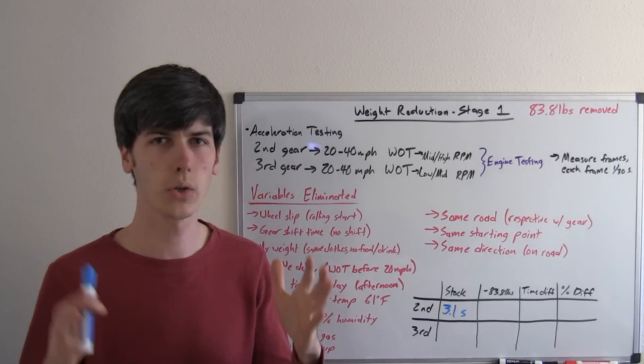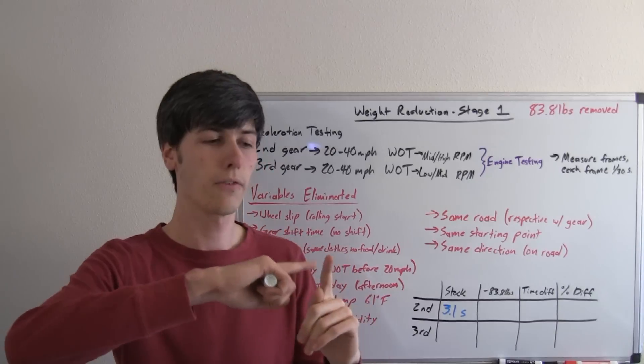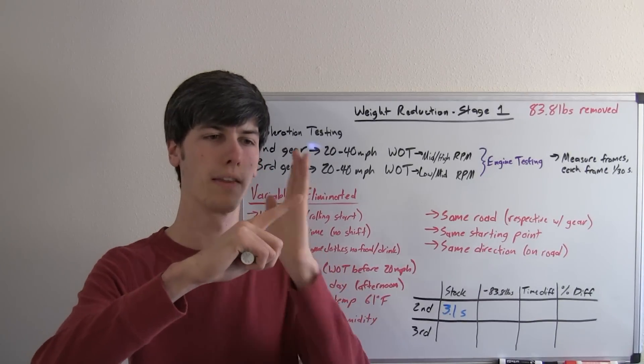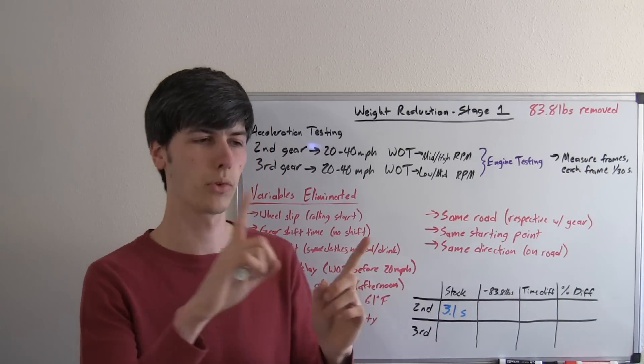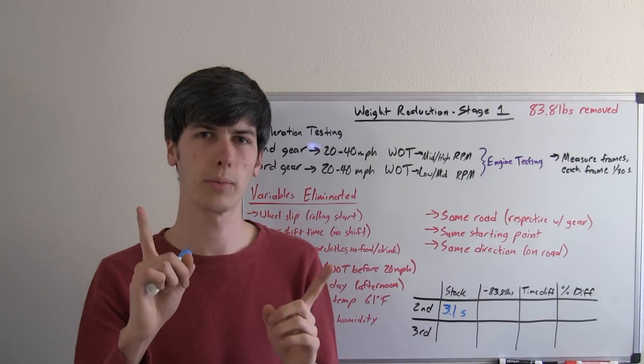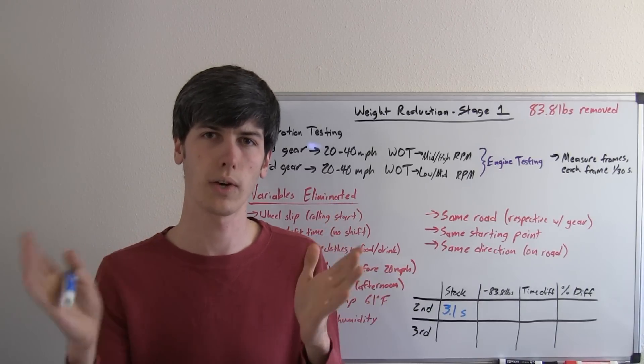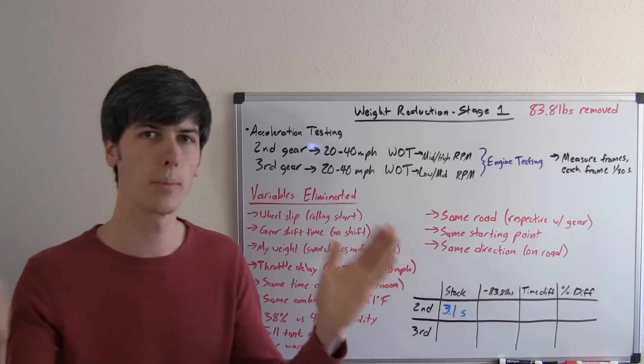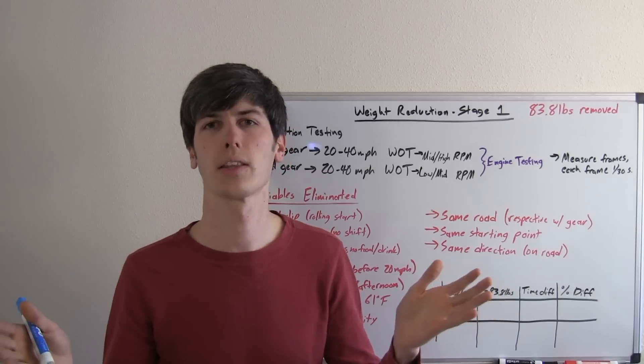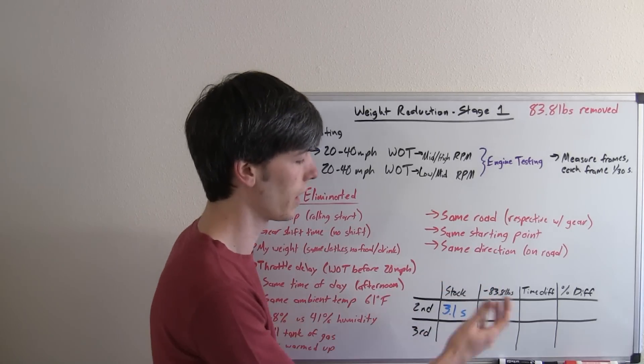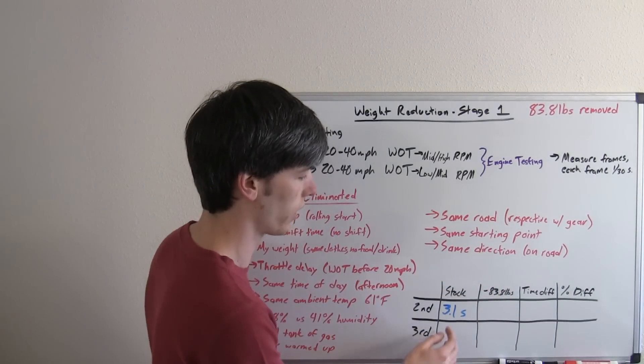And the way I measured this was I took the frames, so the very first frame that it hit 20 miles per hour, that was my starting point. The last frame was when the speedometer hits 40 miles per hour, and basically each frame is 1/30th of a second because it's 30 frames in a second. So I took the total number of frames, multiplied by 1/30th of a second, and that gives me the total duration. So it's all going to be in increments of 1/30th of a second.